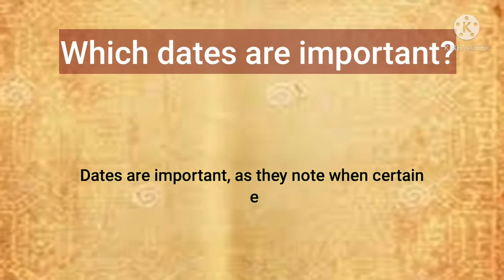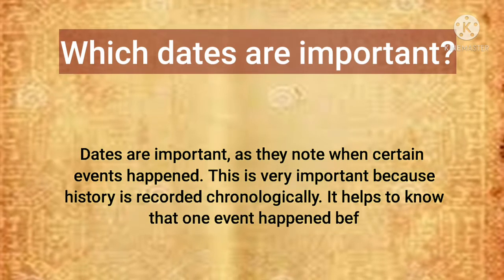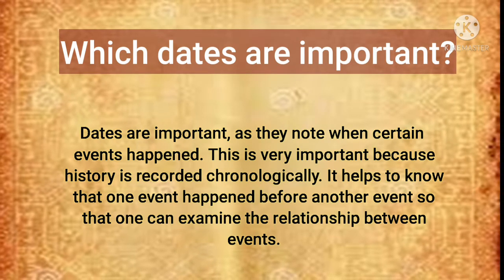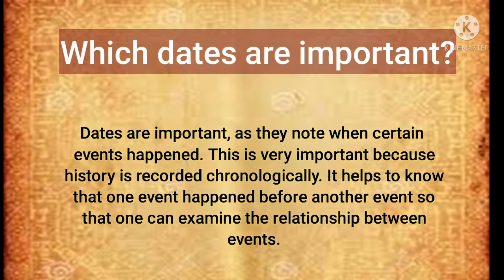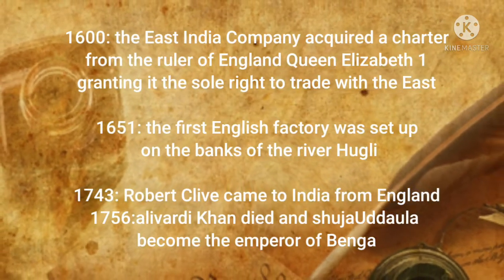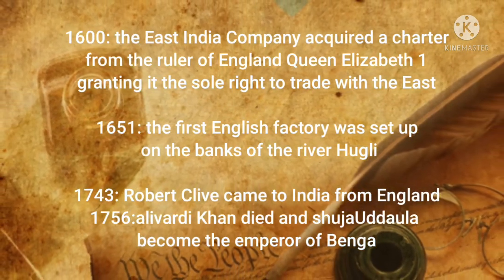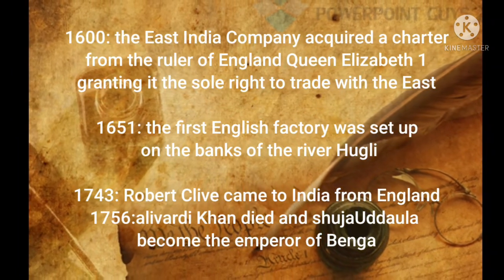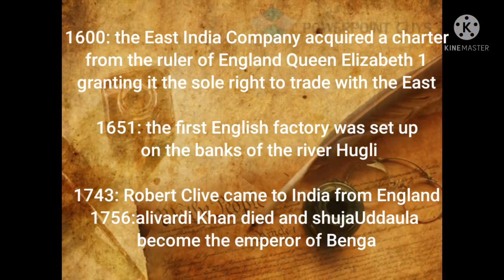Which dates are important? Dates are important as they note when certain events happened. This is very important because history is recorded chronologically. It helps to know that one event happened before another so that one can examine the relation between events. For example: in 1600, the East India Company got the right to trade with the East; in 1651, the first English factory was set up; in 1743, Robert Clive came to India; in 1756, Aliwardi Khan died and Siraj ud-Daula became the Nawab of Bengal.